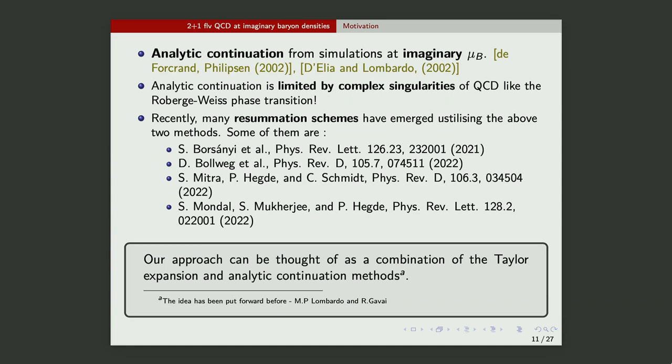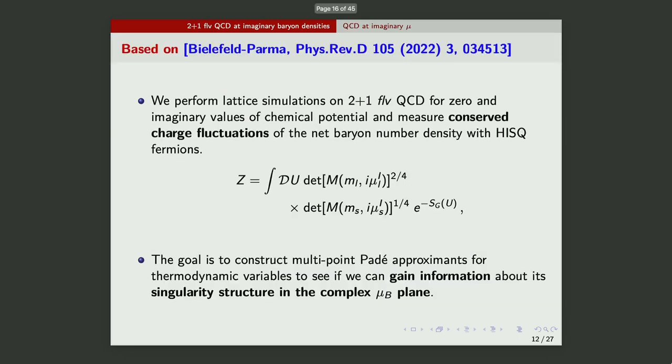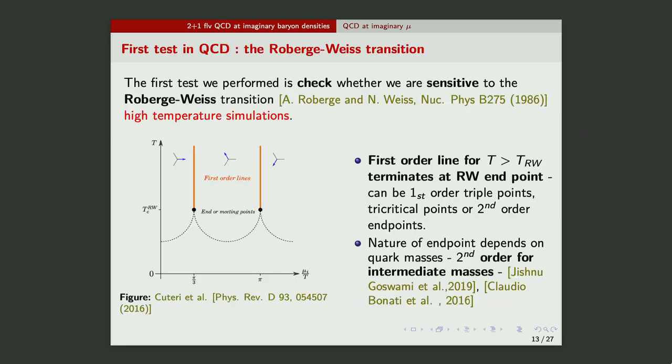Recently, our method that we do here is combine imaginary mu and zero mu simulations into, and we resummate into a rational approximation. So, again, just a brief, we use staggered fermions, so this is what our action looks like, partition function looks like. We do 2+1 physical mass QCD. We do imaginary mu simulations. The first singularity that we want to see if we are sensitive to is a Roberge-Weiss transition. You can look at this paper, historical paper, for why there should be a phase transition at all T greater than T_RW.